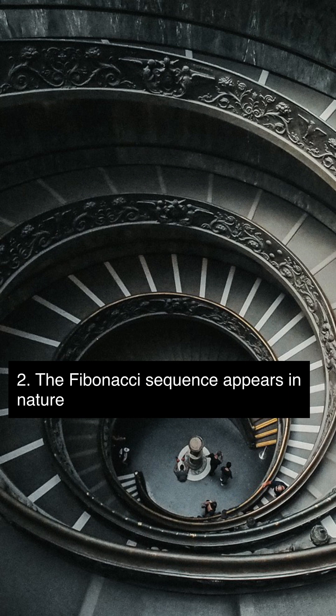The Fibonacci sequence, a series of numbers in which each number is the sum of the two preceding numbers, appears in many natural patterns such as the arrangement of leaves on a stem and the branching of trees, demonstrating the intrinsic beauty and order of mathematics in the natural world.